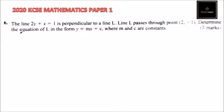This is question number 6. We are told the line 2y + x = 1 is perpendicular to a line L. Line L passes through point (2, -1). Determine the equation of L in the form y = mx + c where m and c are constants.